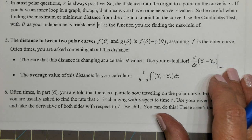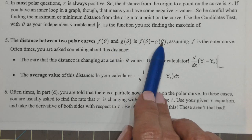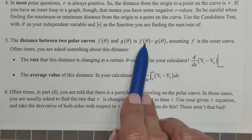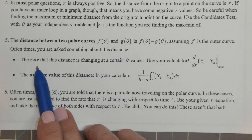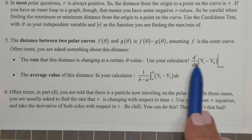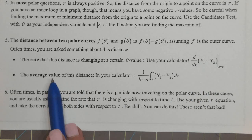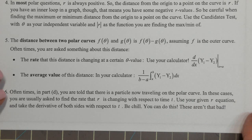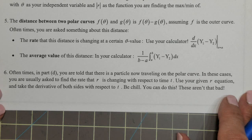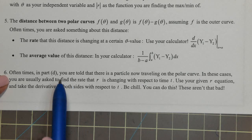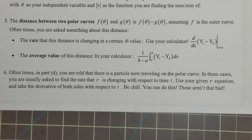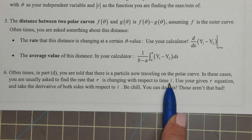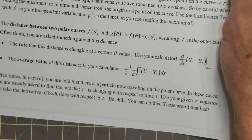The distance between two polar curves: think outer minus inner. The rate that distance is changing would be the derivative of outer minus inner. The average value of that distance uses the average value formula with outer minus inner. In Part D, they often throw in a particle traveling along the curve and ask for a related rates problem — just take your derivative with respect to T. These are not bad problems.